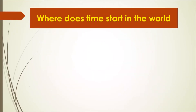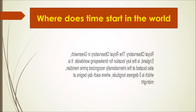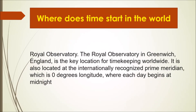Where does time start in the world? Time starts at the Royal Observatory. The Royal Observatory in Greenwich, England is the key location for timekeeping worldwide. It is located at the internationally recognized prime meridian — zero degrees longitude — where each day begins at midnight.